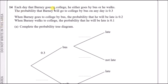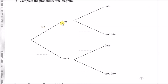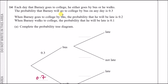Question 14: each day Barney goes to college by bus (probability 0.3) or walks (probability 0.7). When he takes the bus, the probability he is late is 0.2 (not late: 0.8). When he walks, the probability he is late is 0.1 (not late: 0.9). Complete the tree diagram using these values.